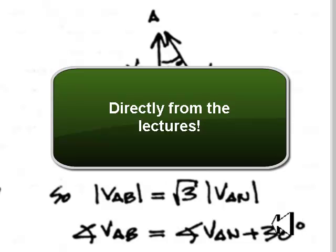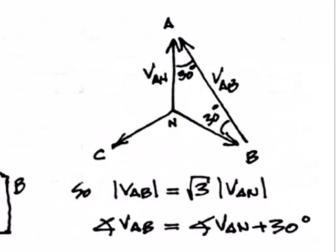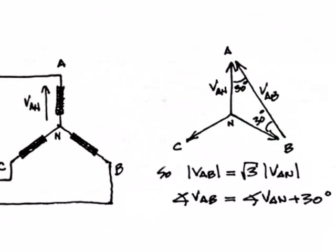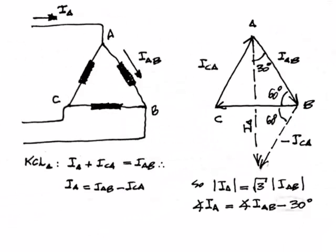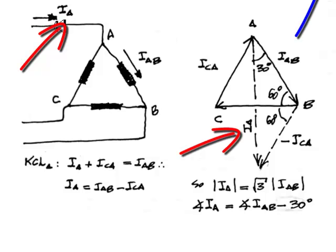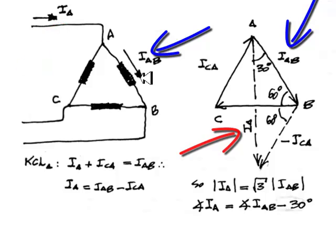That was one class result that we will apply to this question in the final exam. Also, as part of your homework, you were asked to explore further the relationship between line currents and phase currents in a delta-connected load. Let's revisit that homework.